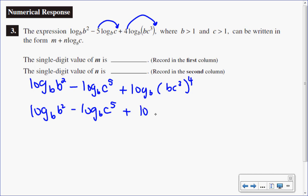So I have log base b of distribute the 4 inside the brackets, b exponent 4, c exponent 3 times 4 is 12. So in my next step,